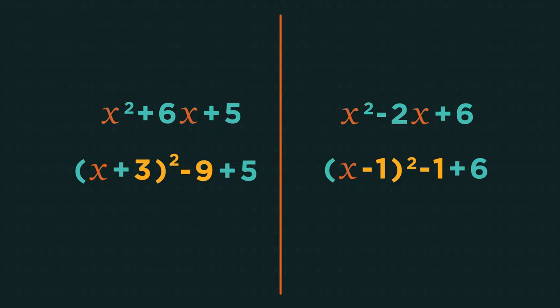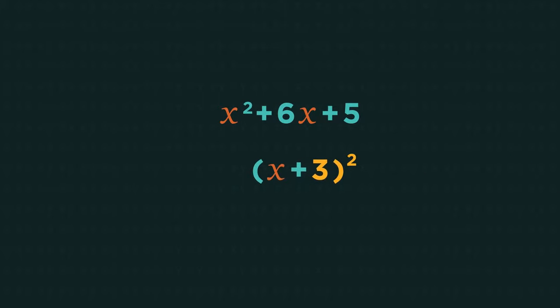Think of expanding brackets. So let's go back one step to this and expand the x plus three squared. We get x squared plus six x plus nine. We don't want the plus nine. We just want plus five. So to balance it out, we need to subtract nine. Which is why we always subtract the square of the number in the bracket.